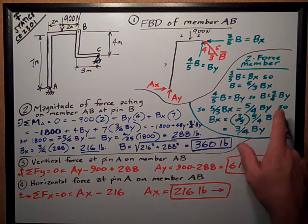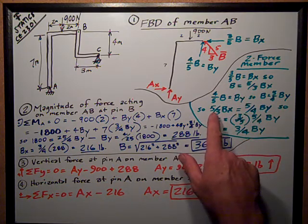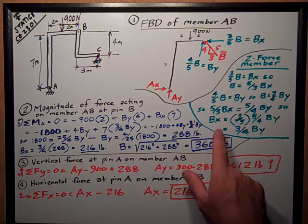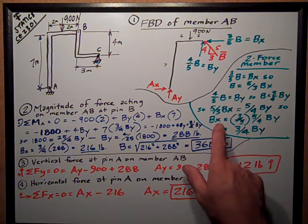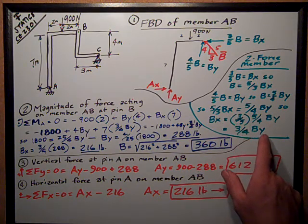We can just say that B equals B, and 5/3 BX equals 5/4 BY. So we can express BX as this function of BY, which simplifies down to 3/4 BY.